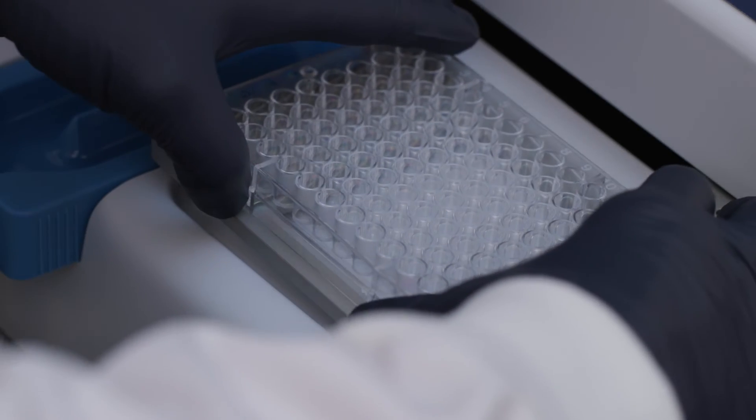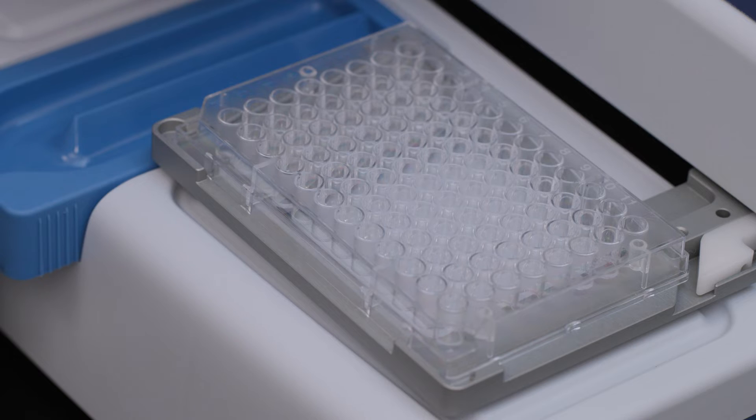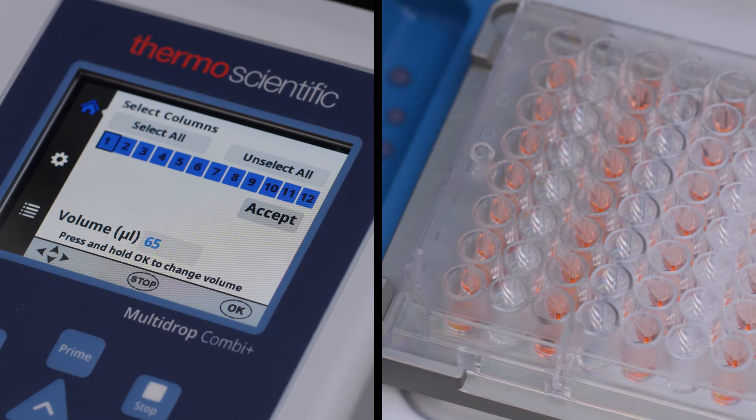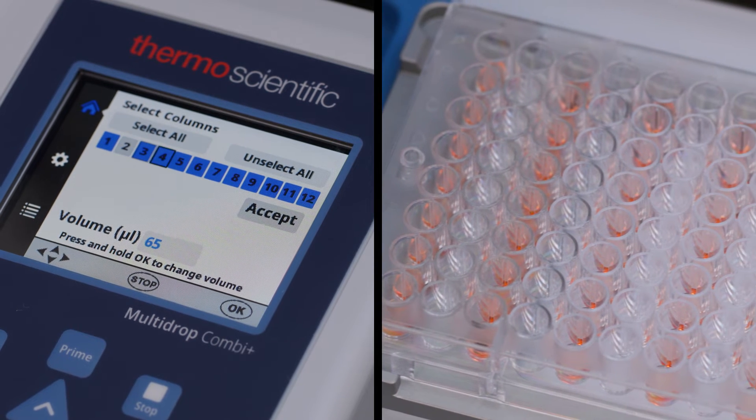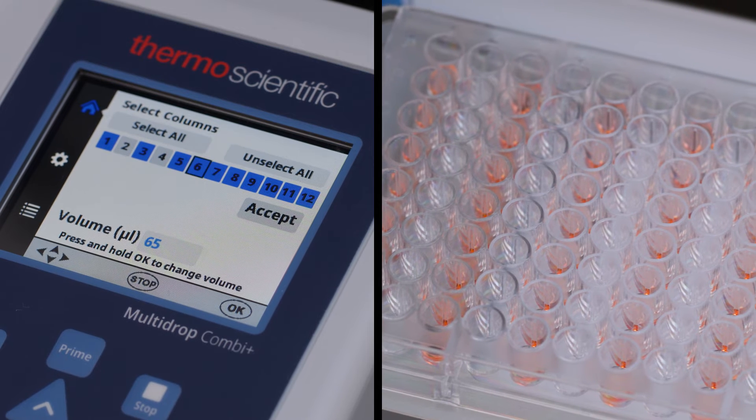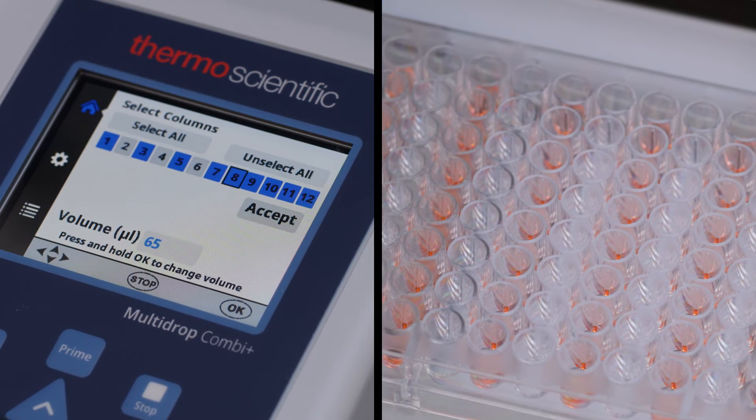Once you've made your selections, place your microplate on the multi-drop plate carrier. You can choose to fill the whole plate or just certain columns, and you can even adjust the dispensing volume for individual columns.